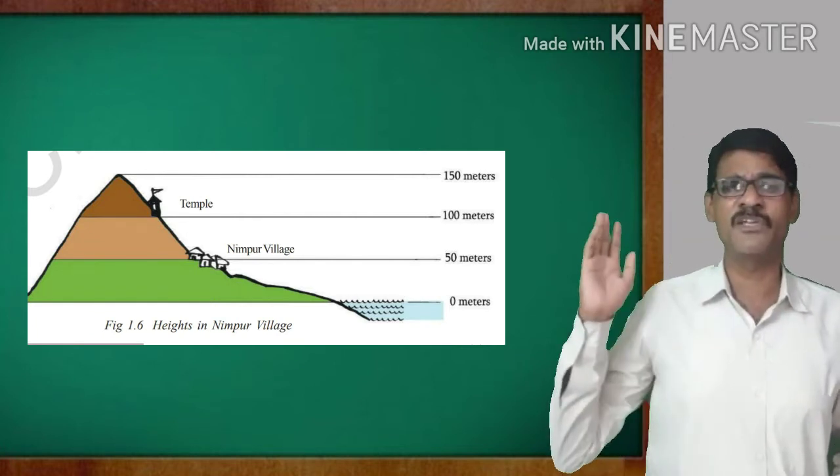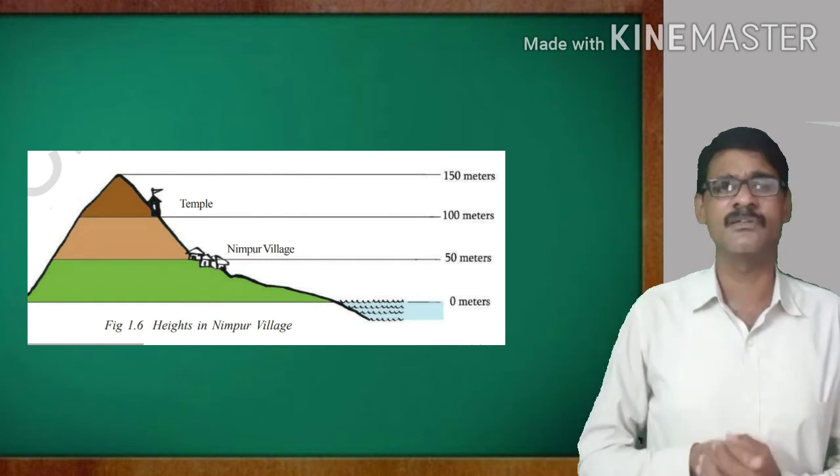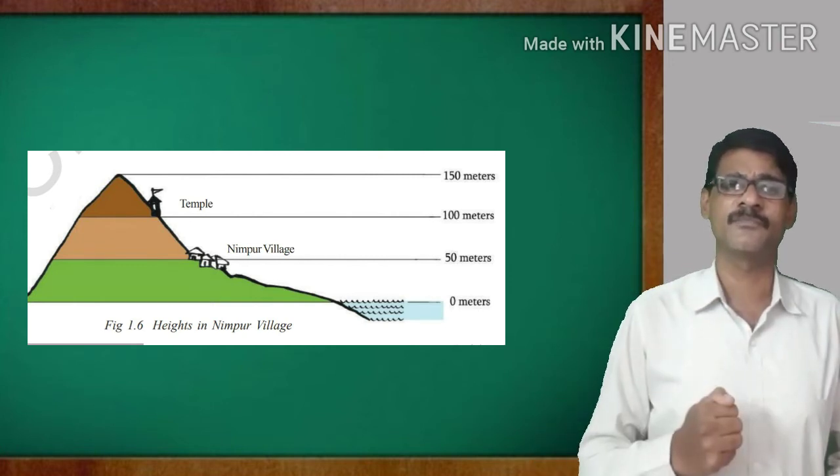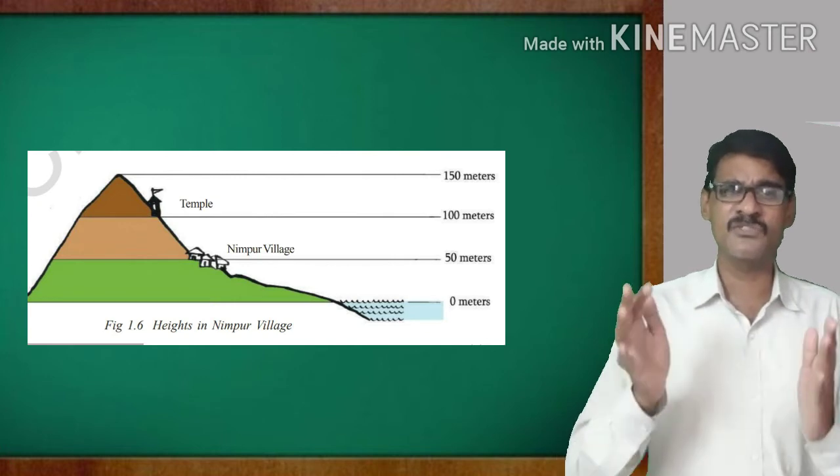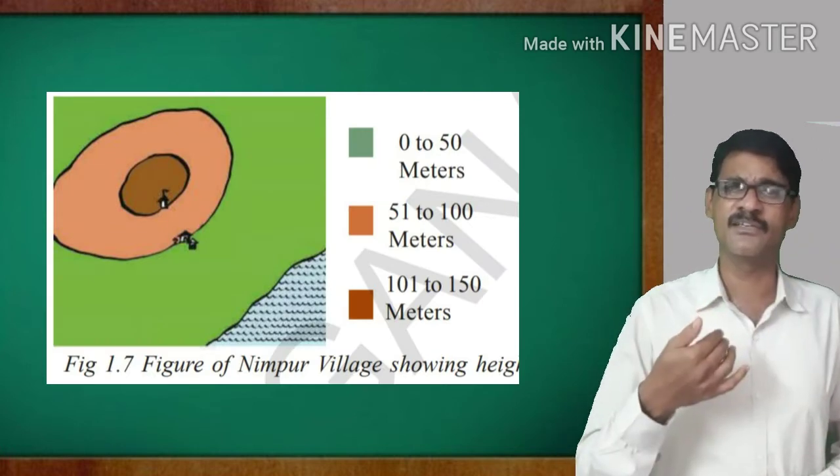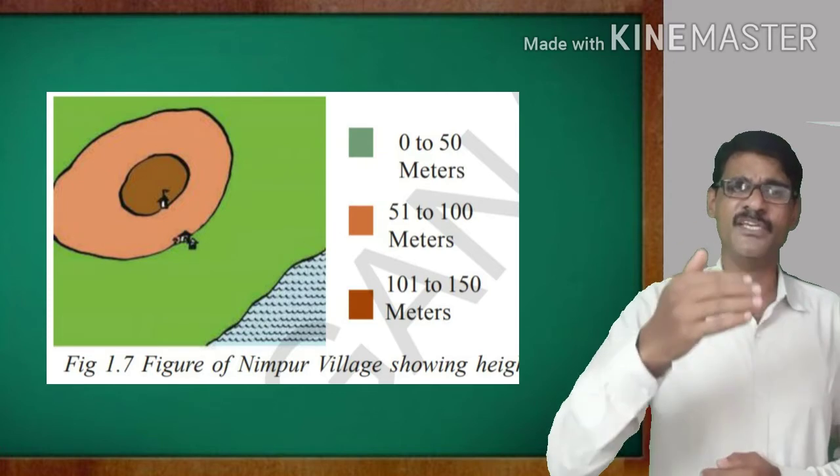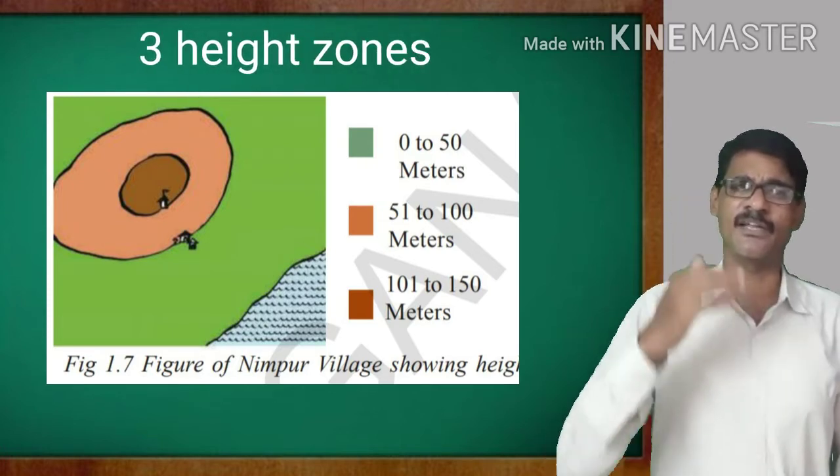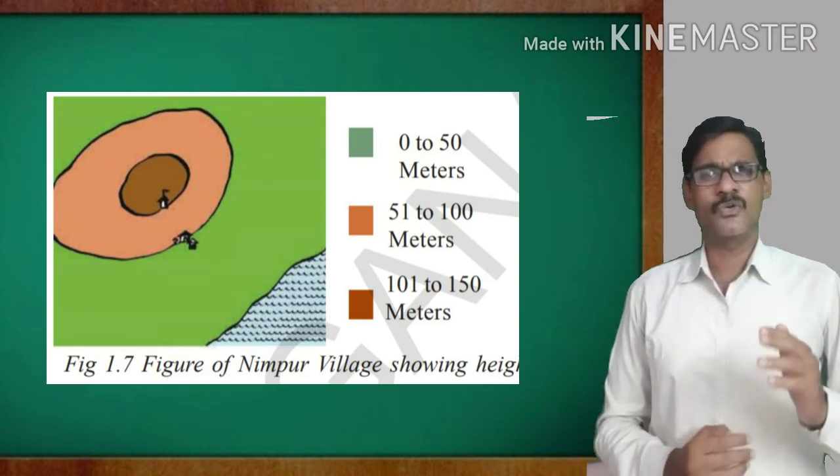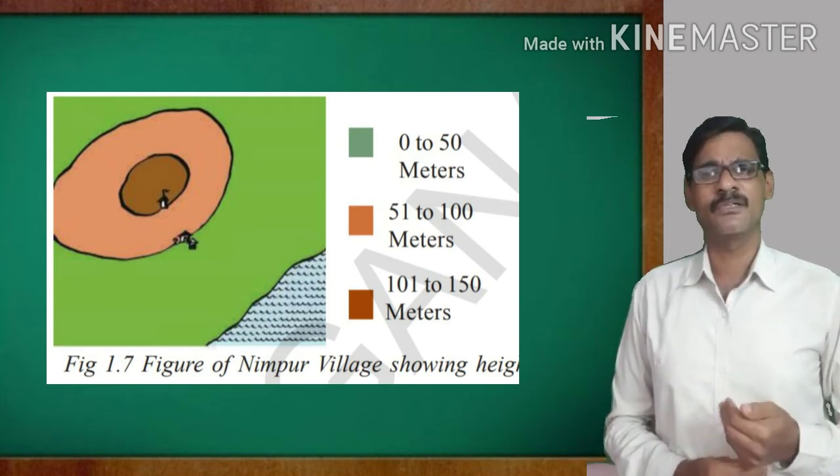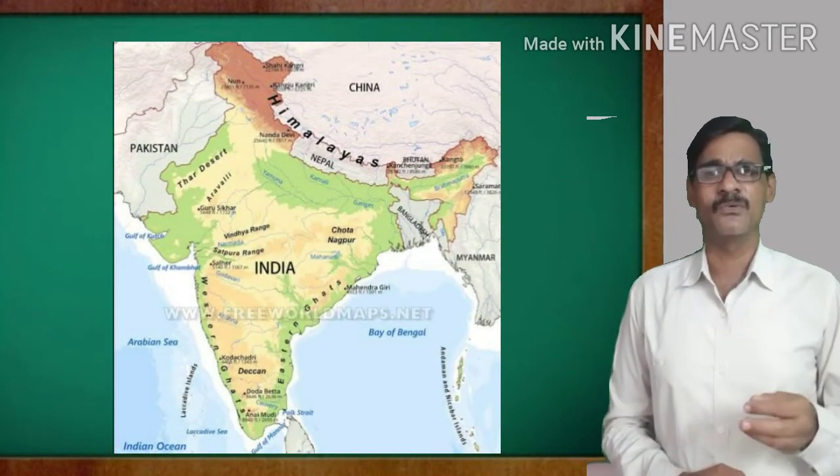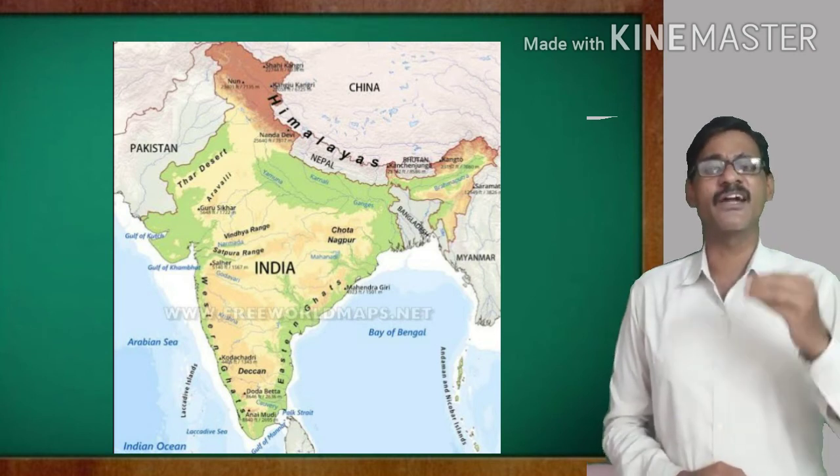We are calculating the heights on the surface of the area on the earth surface from the sea level. And we have the picture of Ningpur village. And in this picture, we can observe the village is located above the 50 meters from the sea level. And which is also shown on the map. The height of that village is taken as 0 to 50 meters, 50 meters to 100 meters, and 100 meters to 150 meters.